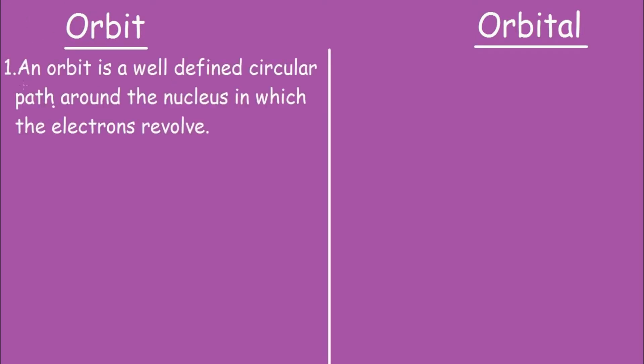Let's study the differences between orbit and orbital. So the first point under orbit is, an orbit is a well-defined circular path around the nucleus in which the electrons revolve.